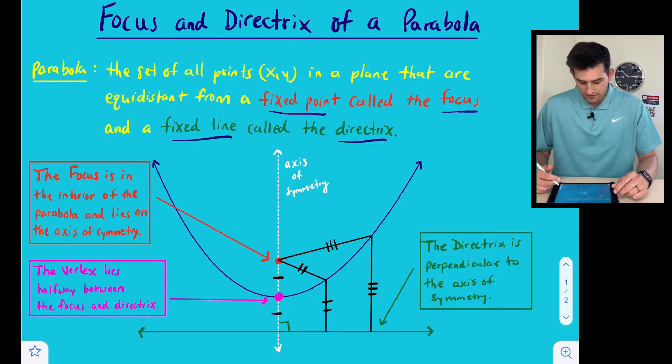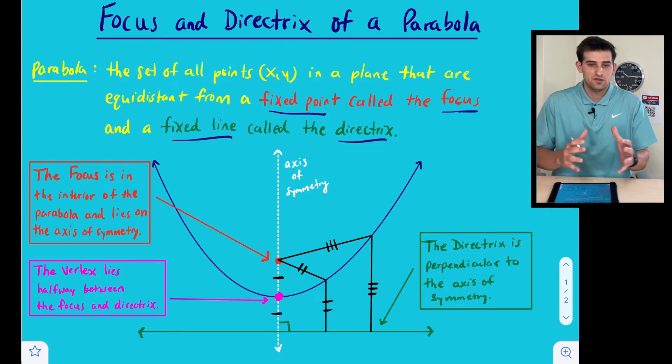So now we're going to talk about the directrix, and that's the green line that we have at the bottom. It says the directrix is perpendicular to the axis of symmetry. So if we think about axis of symmetry being a vertical line, a line that's perpendicular to a vertical line would be a horizontal line. So that tells us the directrix is a horizontal line.